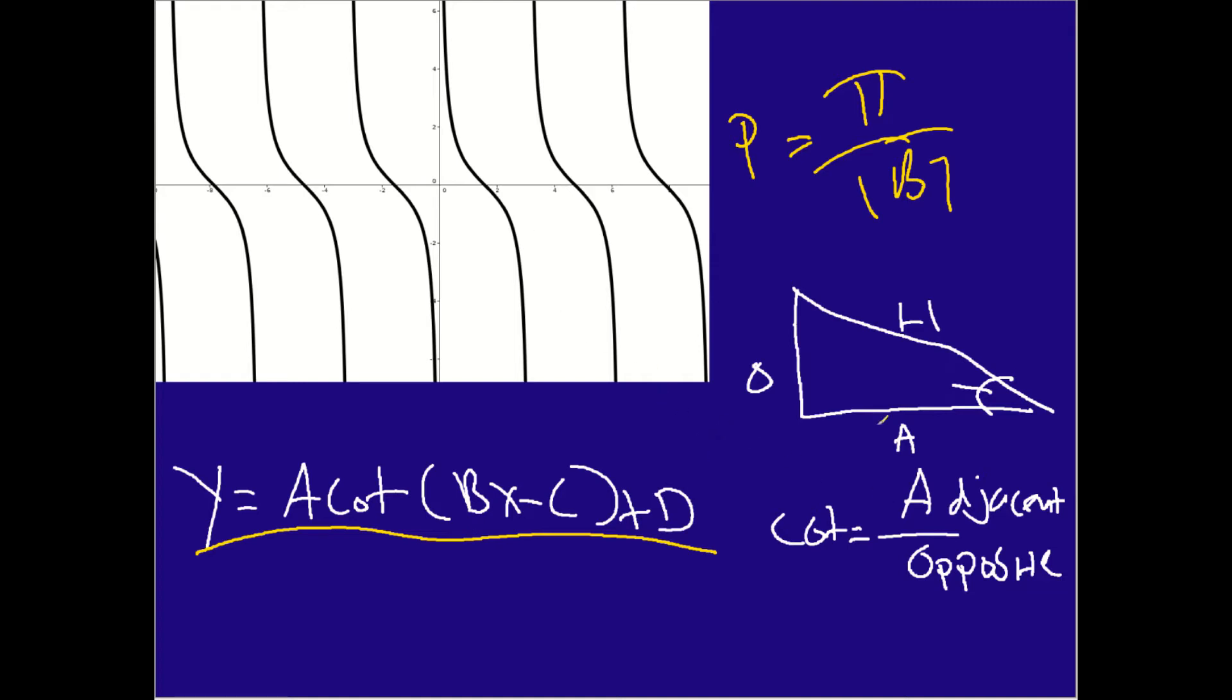And, of course, in case you forgot, the cotangent is the reciprocal of the tangent. And so cotangent is adjacent over opposite. And so this is an example right here. If you look at the triangle, adjacent over opposite is how you would calculate the cotangent. Whereas opposite over adjacent is how you deal with tangent. So this is kind of the behavior of it.